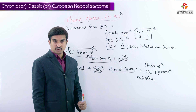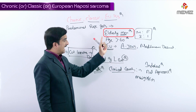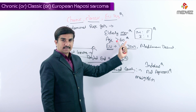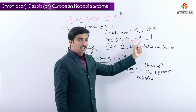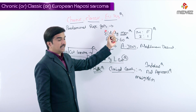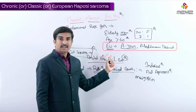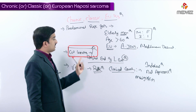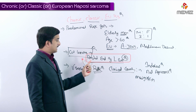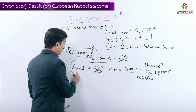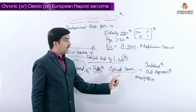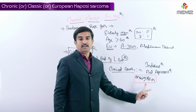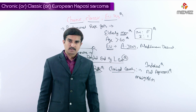Quick review of classic or European Kaposi sarcoma: the predominant risk groups are elderly men greater than 60 years, with a male-to-female ratio of 3 to 1. It is more common in European individuals, especially Ashkenazi Jews and Mediterranean descent. Cutaneous lesions are located at the distal end of the lower extremities; visceral involvement is rare. The clinical course is indolent — silent, not aggressive — and mainly confined to the skin.